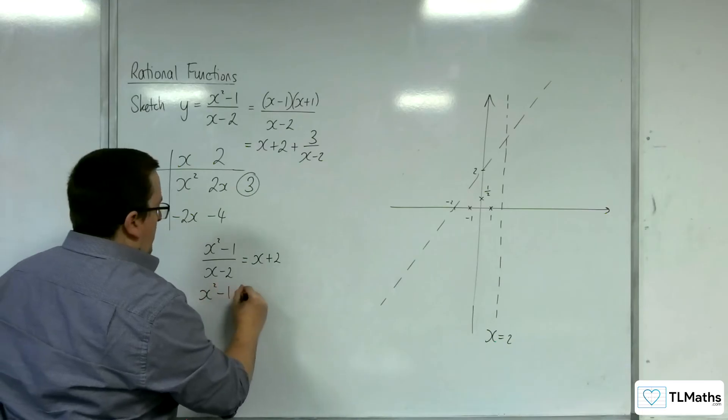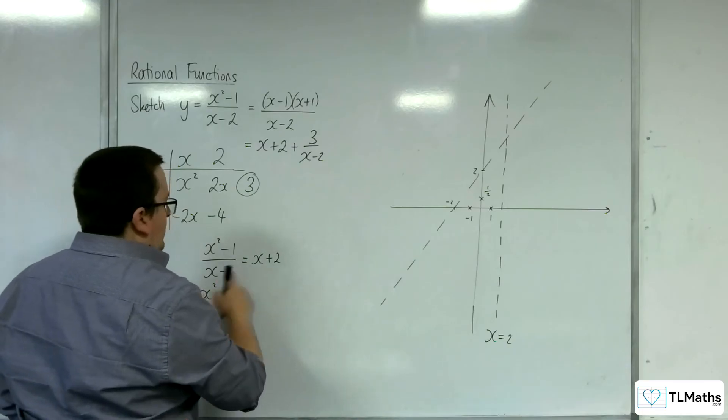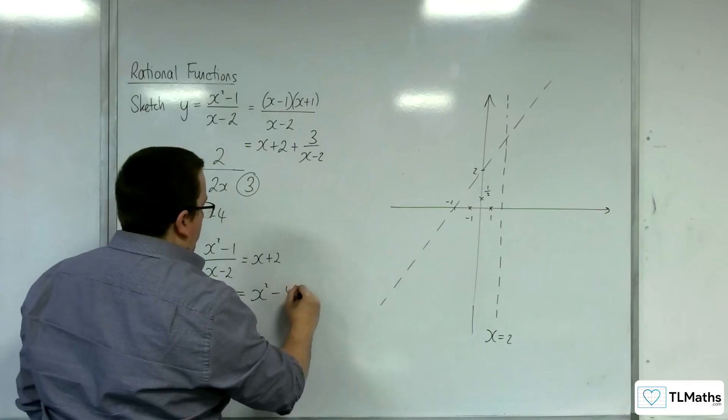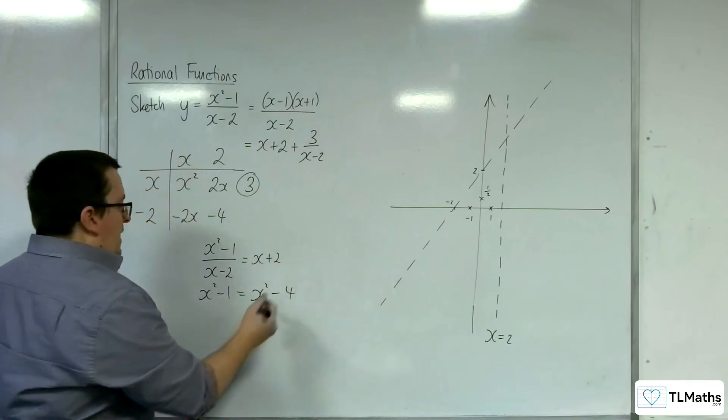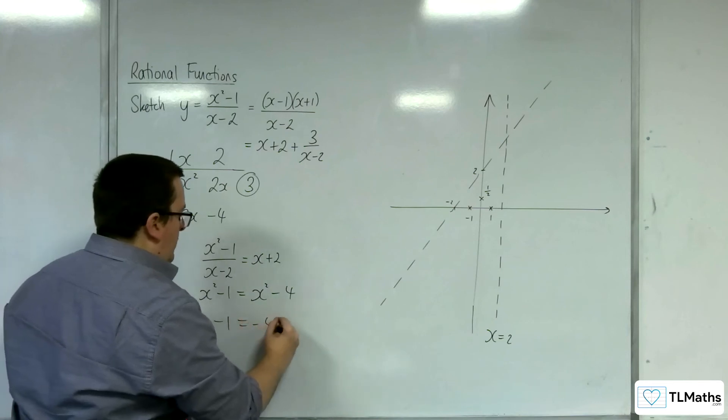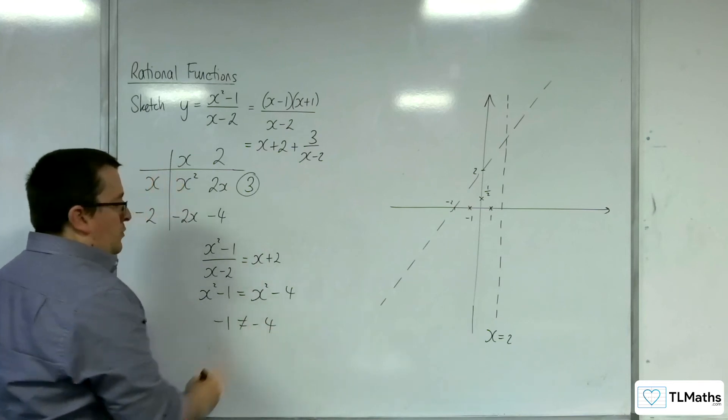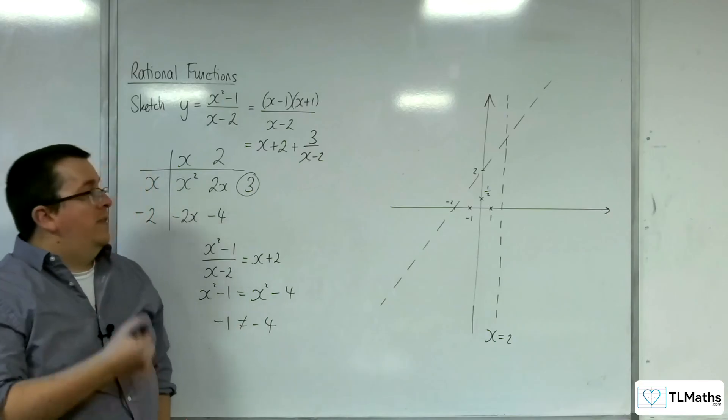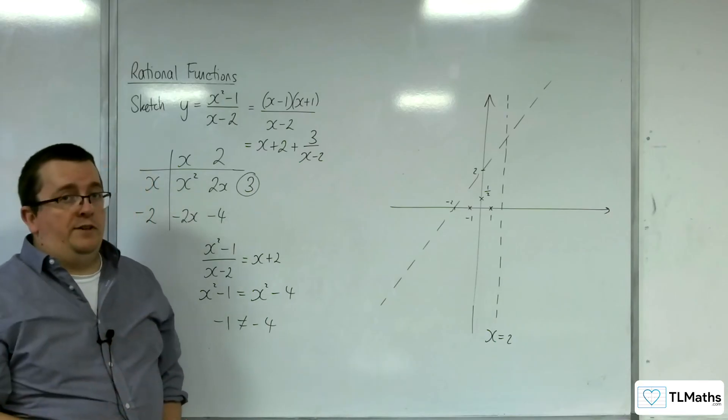So if I multiply up by the x take away 2, I'm going to get x squared take away 4. So then when I count to x squared from both sides, I would get minus 1 is equal to minus 4, which of course isn't correct. And so that must mean that the curve and the line do not intersect.